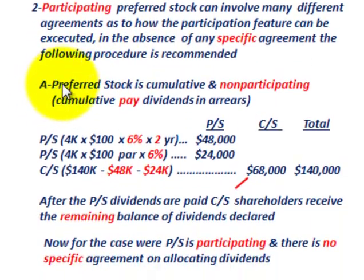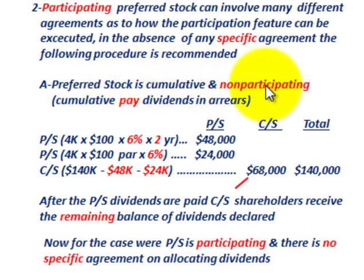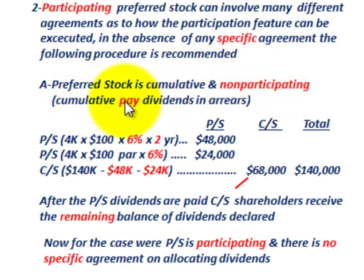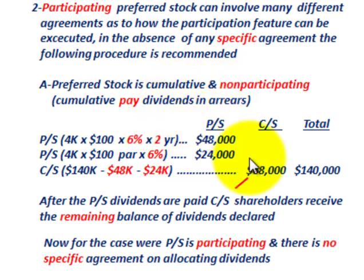The first case we'll look at is where we have preferred stock that is cumulative and non-participating. Cumulative simply means it's going to have to pay dividends in arrears. So let's look at how we'd allocate out this total $140,000 worth of dividends that have to be paid out of retained earnings.